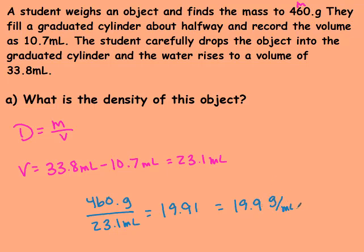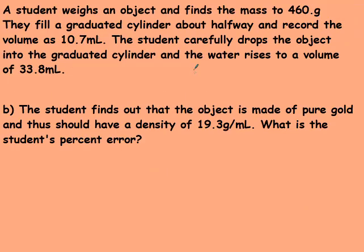So the density we just calculated was 19.9. Then part B says that they find out that the object was actually pure gold, and thus has a density of 19.3. So what is the student's percent error on this object? Pause the video and find your percent error. Restart when you have your answer.